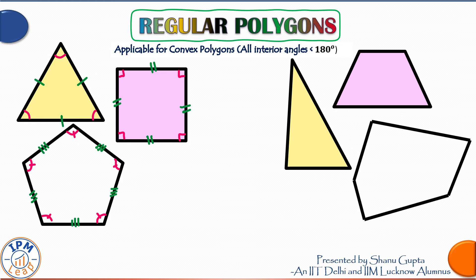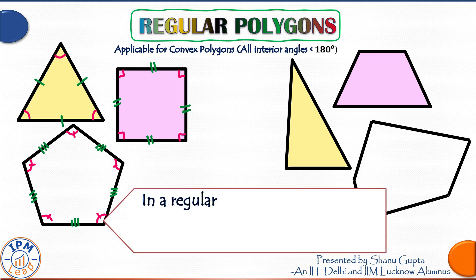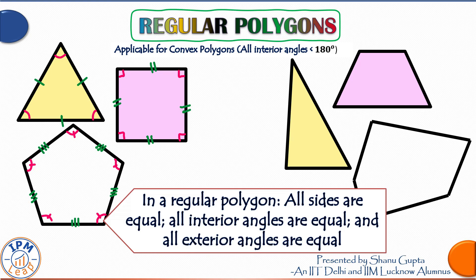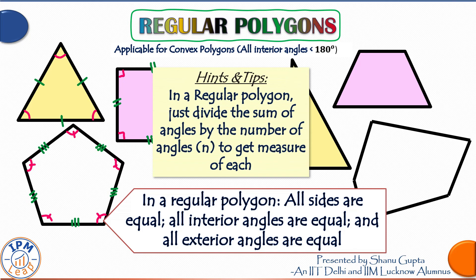Now let's discuss some related formulas for regular polygons. Apart from the number of sides, one important criterion is whether the sides are equal or not. A polygon is called a regular polygon if all its sides and thereby all its angles are equal. In contrast, an irregular polygon has unequal sides and angles. If they ask you the measure of each angle in a regular polygon, simply divide the sum equally over all n angles to get the measure of each angle.